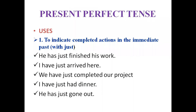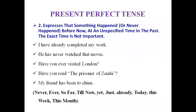Use number one of present perfect tense: to indicate completed actions in the immediate or recent past. The adverb used is 'just.' Examples: 'He has just finished his work,' 'I have just arrived here,' 'We have just completed our project,' 'I have just had dinner,' 'He has just gone out.' This use shows immediate past — something that happened very recently. Use 'just' with this tense.